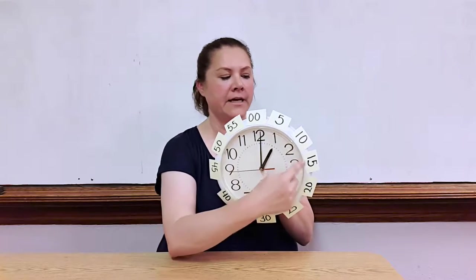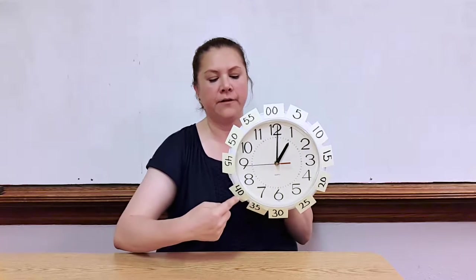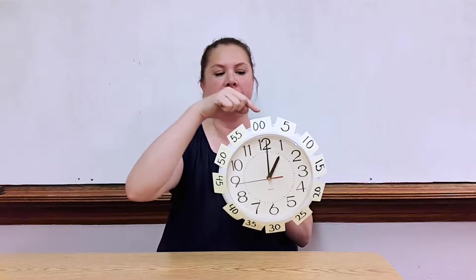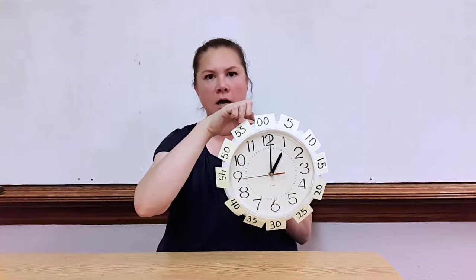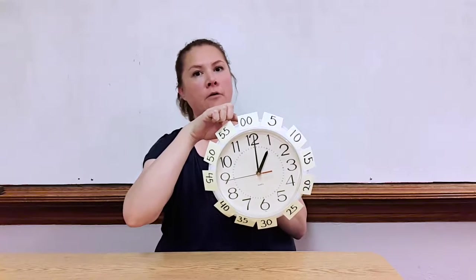So we'll count 5, 10, 15, 20, 25, 30, 35, 40, 45, 50, 55, and then I tell them the double zero at the top means o'clock, that means the top of the hour.